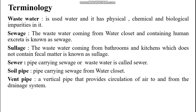Terminology: Wastewater is used water that has physical, chemical, and biological impurities in it. Sewage is the wastewater coming from water closets and containing human excreta. The wastewater coming from bathrooms and kitchens which does not contain fecal matter is known as sullage. A pipe carrying sewage or wastewater is called a sewer.